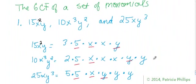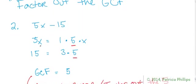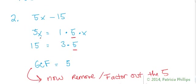In the previous problem, there were no operators between these monomials — just a comma, basically a list. That's also how you know you're only going to find the greatest common factor and then you're done. But here in this problem, you actually have a binomial consisting of two monomials with a subtraction sign between them, so this is one whole thing together.